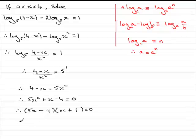Okay, and in the usual way, it means that, therefore, either the 5x minus 4 equals 0 or the other factor, x plus 1, equals 0.